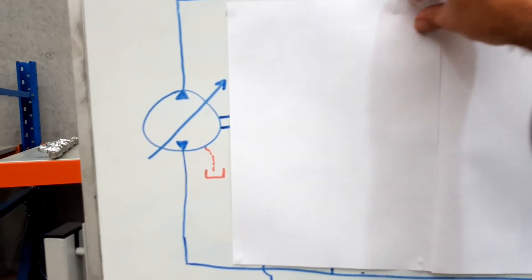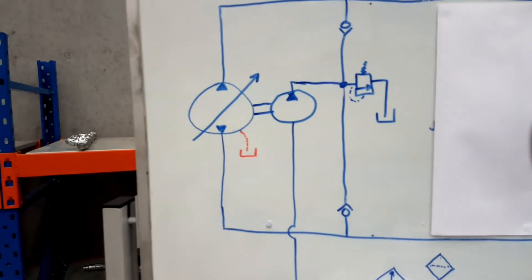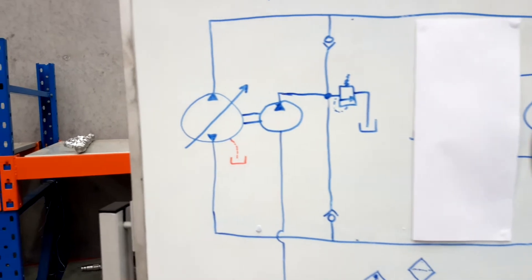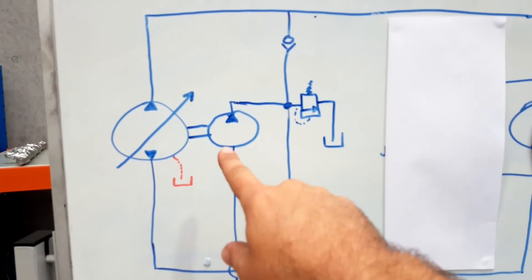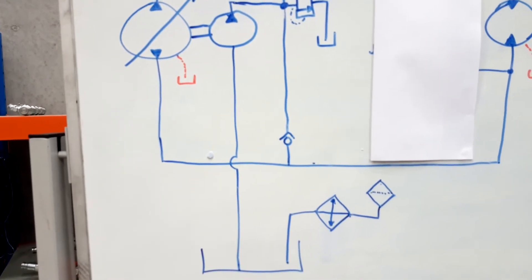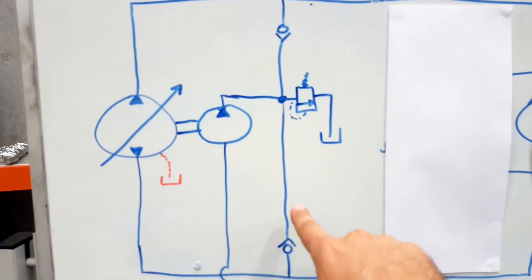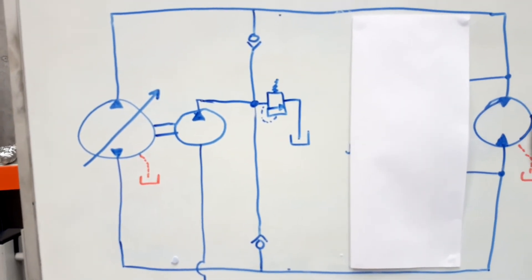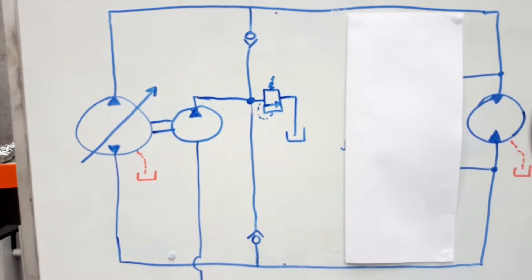To fix this, our closed loop transmissions use a boost pump or a charge pump. So here I've drawn very quickly our charge pump. We've got a charge pump here - it draws from the tank down the bottom and we deliver oil into two check valves, and they allow the oil to go into the low pressure side or the low pressure leg of our closed loop transmission.